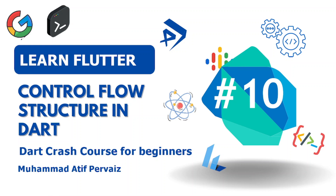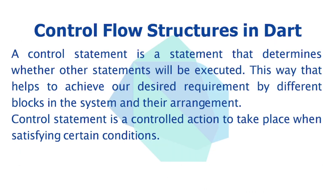This is our third phase of the Dart programming language. In this phase we will discuss about control flow structures. A control statement is a statement that determines whether other statements will be executed or not. This is a way which helps to achieve our desired requirements by different blocks in the system and their arrangements. A control statement is a controlled action to take place when certain conditions are met.